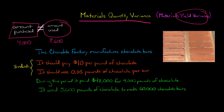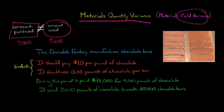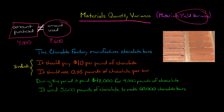This is important because when you calculate the price variance, you want to use the amount that you purchased. But when you do the quantity variance — to see if we did a good job with the amount we used — we're going to use 3,600. We're not going to care about the amount purchased. We used 3,600 pounds to make 60,000 chocolate bars.